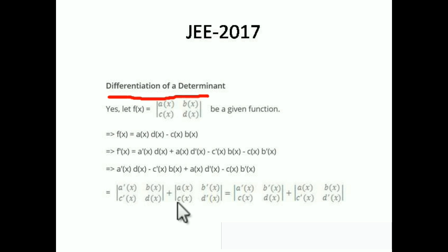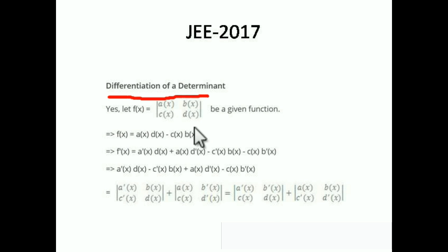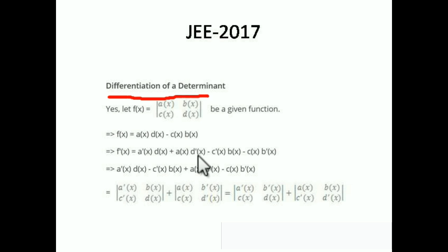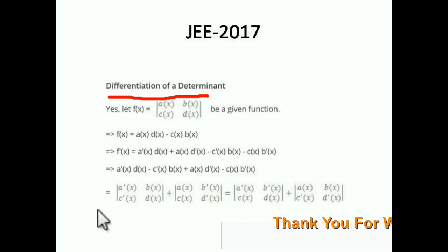You can do the same thing by the row: first row differentiated — a'(x), b'(x) — with the second row steady, plus second row differentiated — c'(x), d'(x) — with the first row steady. To prove this: f(x) = a(x)·d(x) − c(x)·b(x). Differentiating by the product rule gives a'(x)·d(x) + a(x)·d'(x) − c'(x)·b(x) − b'(x)·c(x), which confirms the formula.